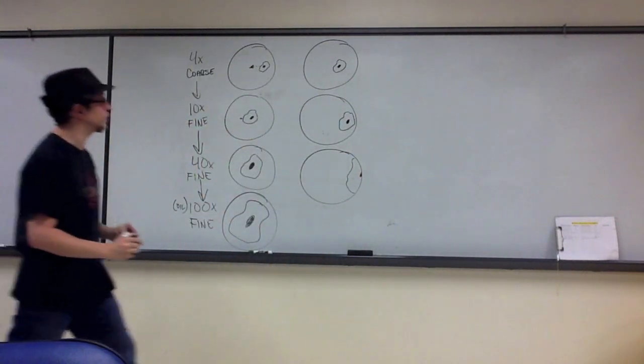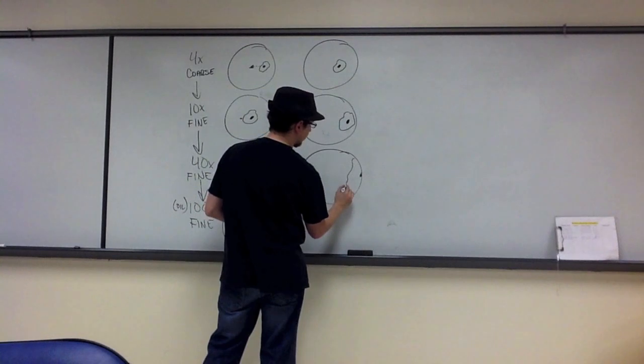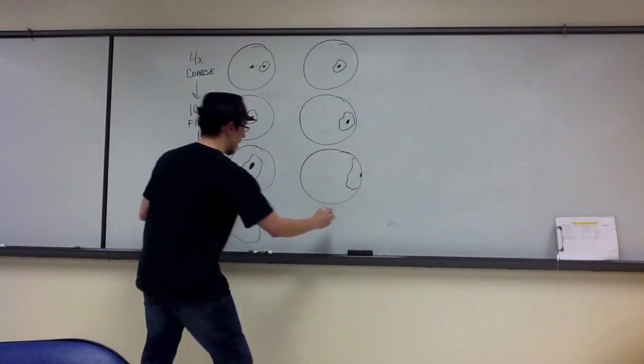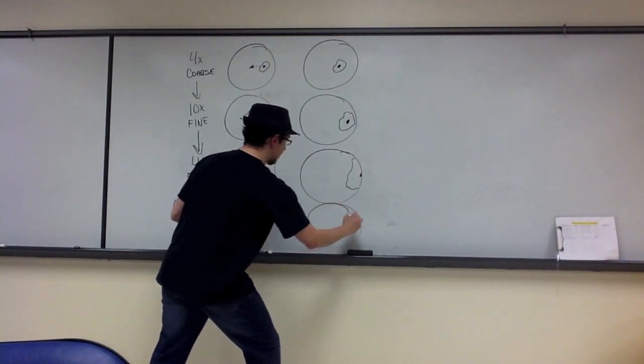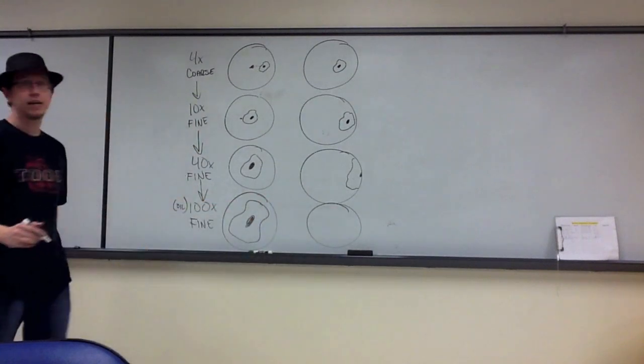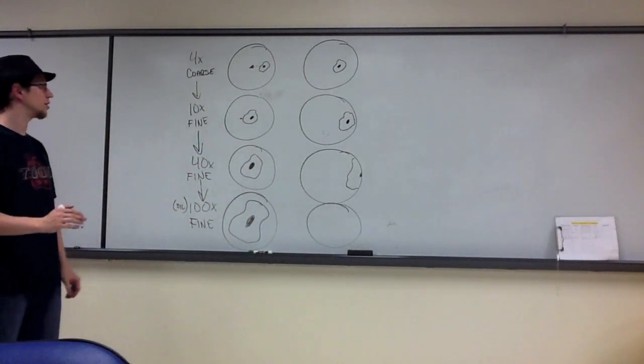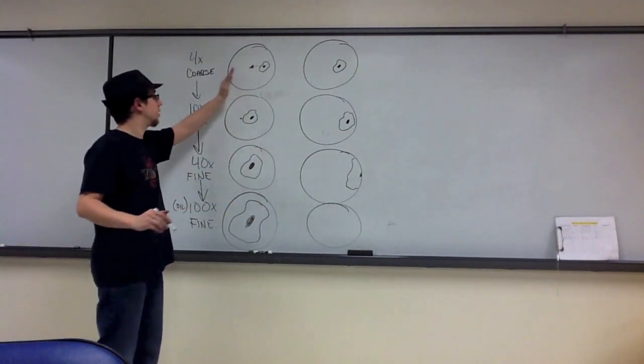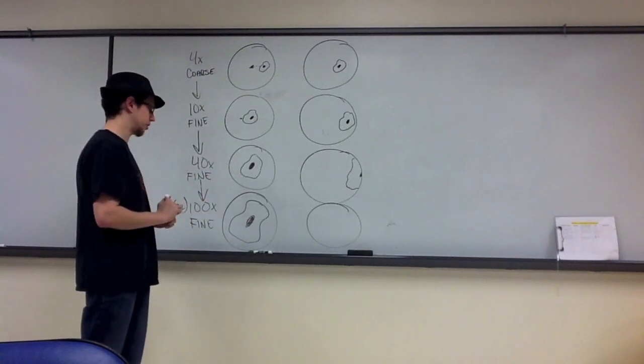I still see that cell to a degree at 40x, but it's off to the side. And then if I took it all the way up to 100x, I might not see any cell at all. This is why it's important to recenter and refocus as you move from objective to objective.